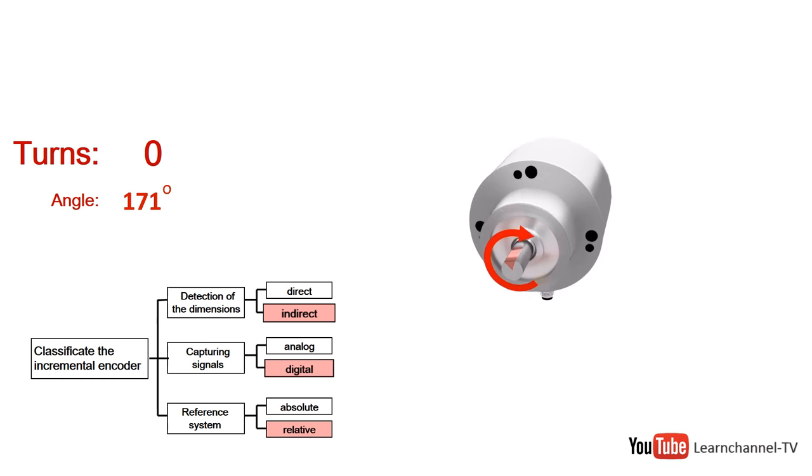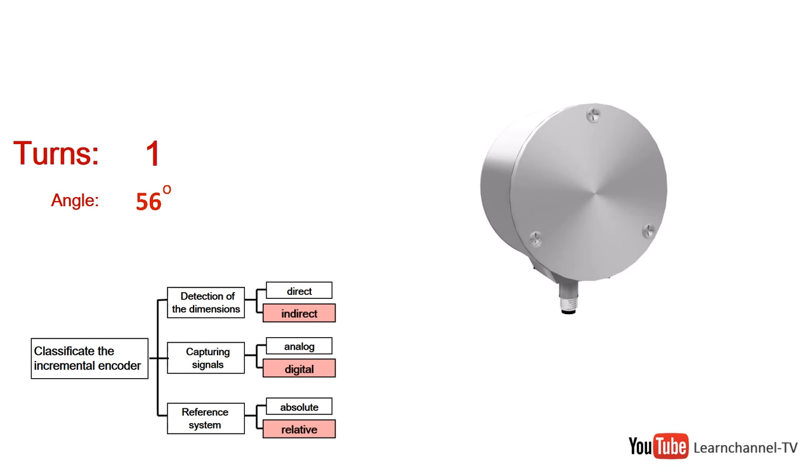A rotary encoder, also called a shaft encoder, can be used in positioning and motor speed feedback applications. In this video, we explain the function of an incremental rotary encoder.